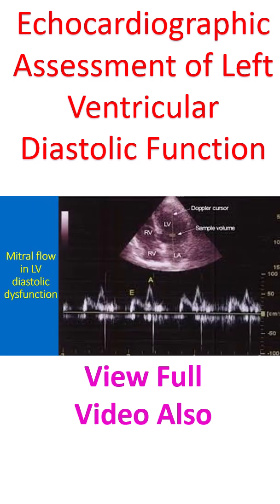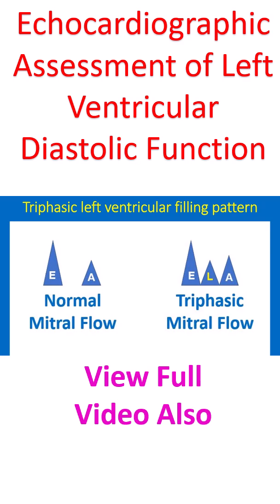The upper half of the image shows the apical 4-chamber view of the heart. The Doppler cursor and the sample volume are seen along the midline of the left ventricle. The lower half of the image shows the Doppler flow pattern across the mitral valve. The X axis is time and the Y axis represents velocity in centimetres per second.